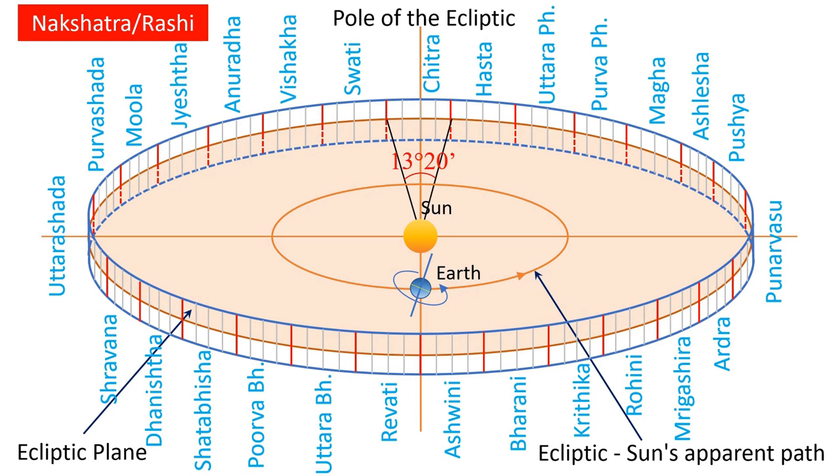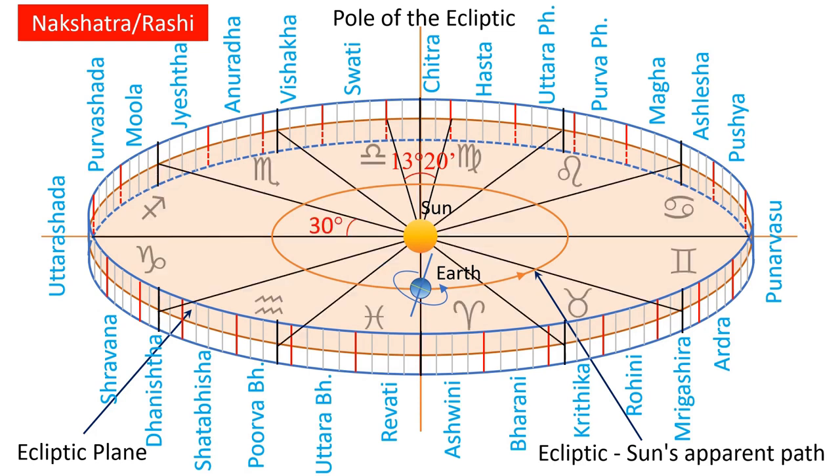We have also seen in the video about rashis in Vedic astrology that the same zodiac is also divided longitudinally into 12 equal parts of 30 degrees each called zodiac signs or rashis as shown on the screen.